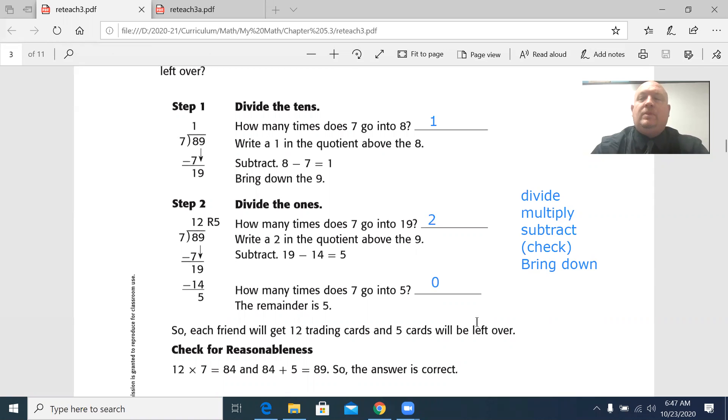It will not. So now I have a remainder. And at this point, you would write that as 12 R5. There are other things you might do with this R5. But for our purposes right now, we'll just write the R5. Check for reasonableness.